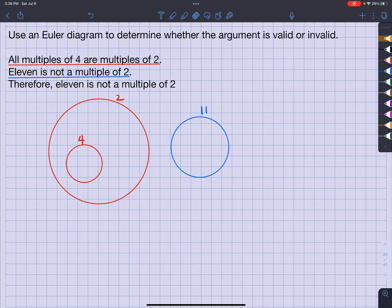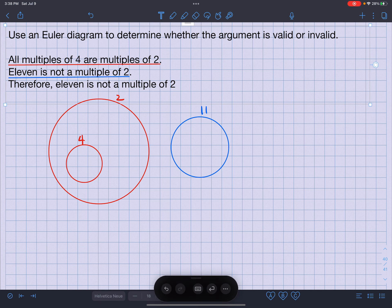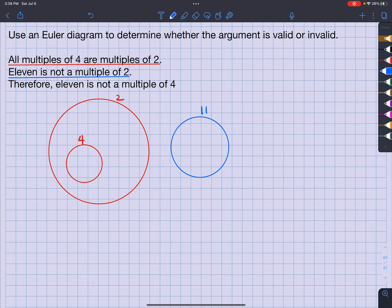Therefore, 11 is not... I did this wrong. This should be 4. There we go. Therefore, 11 is not a multiple of 4.